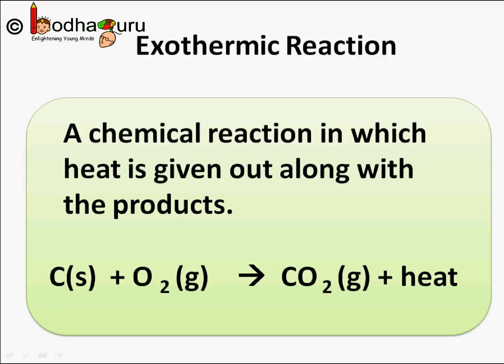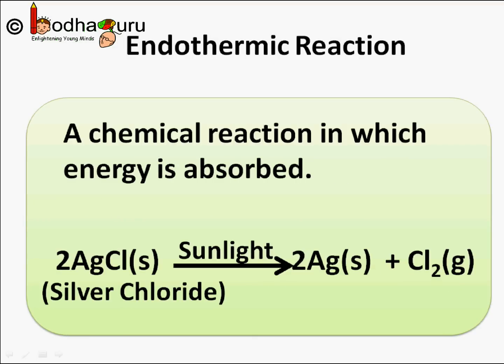To sum up what we learned today: a chemical reaction in which heat is given out along with the products is called an exothermic reaction. For example, burning of coal produces heat energy, represented as C plus O2 gives CO2 plus heat. An endothermic reaction is one in which energy is absorbed. For example, silver bromide in the presence of sunlight decomposes into silver and bromine — energy in the form of sunlight is absorbed during the reaction, and hence it is an endothermic reaction.